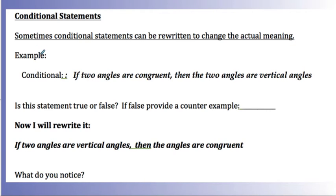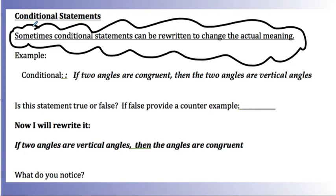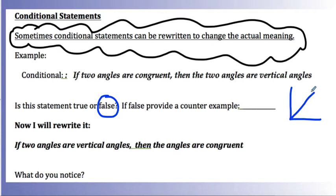Sometimes conditional statements can be rewritten to change their actual meanings. Here's an example: 'If two angles are congruent, then the two angles are vertical angles.' Is this statement true or false? I believe this is a false statement because I could draw angles that are marked congruent to each other — like when they're bisected by an angle bisector — that are not vertical angles but are congruent. So it's false, and that picture is my counter-example.